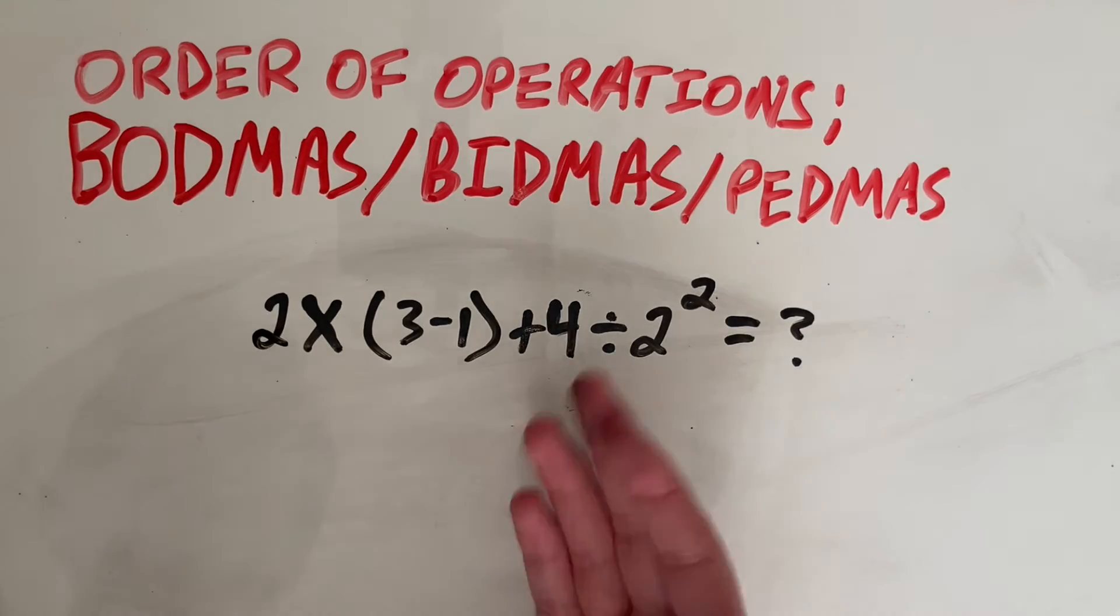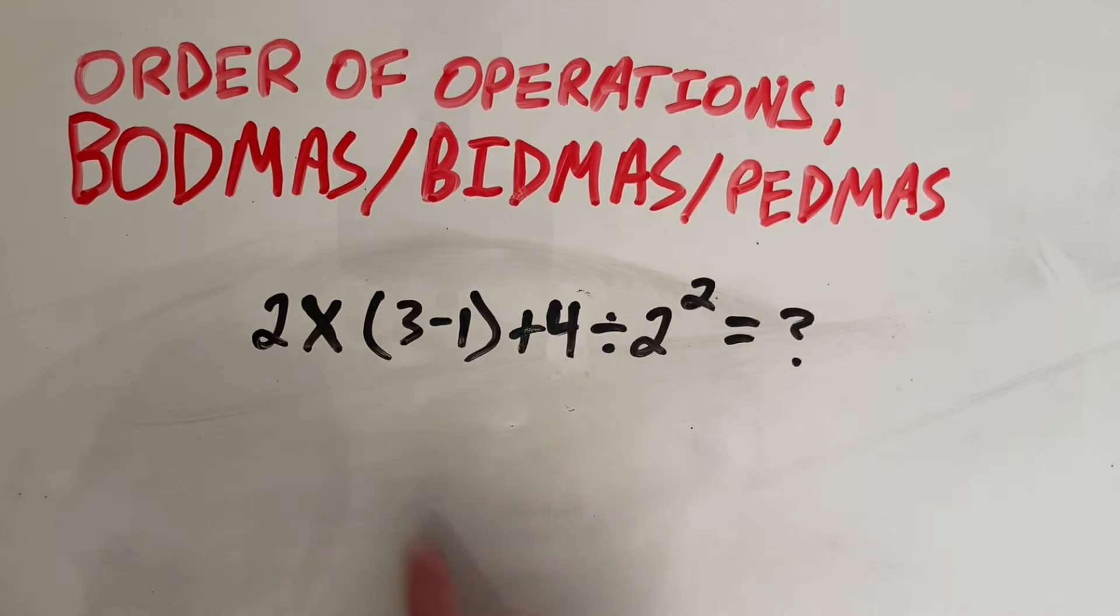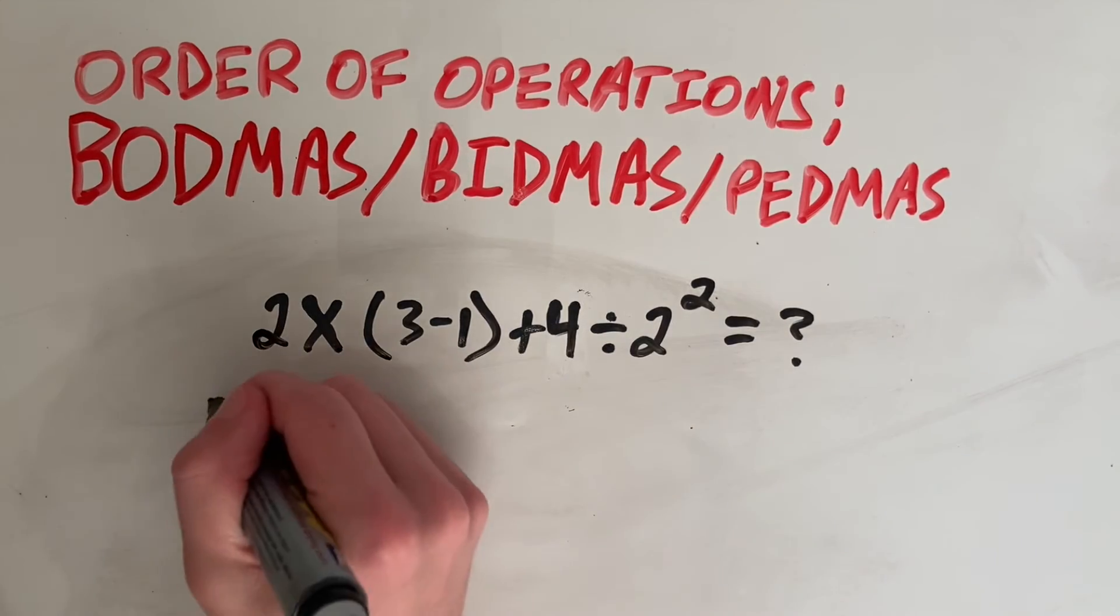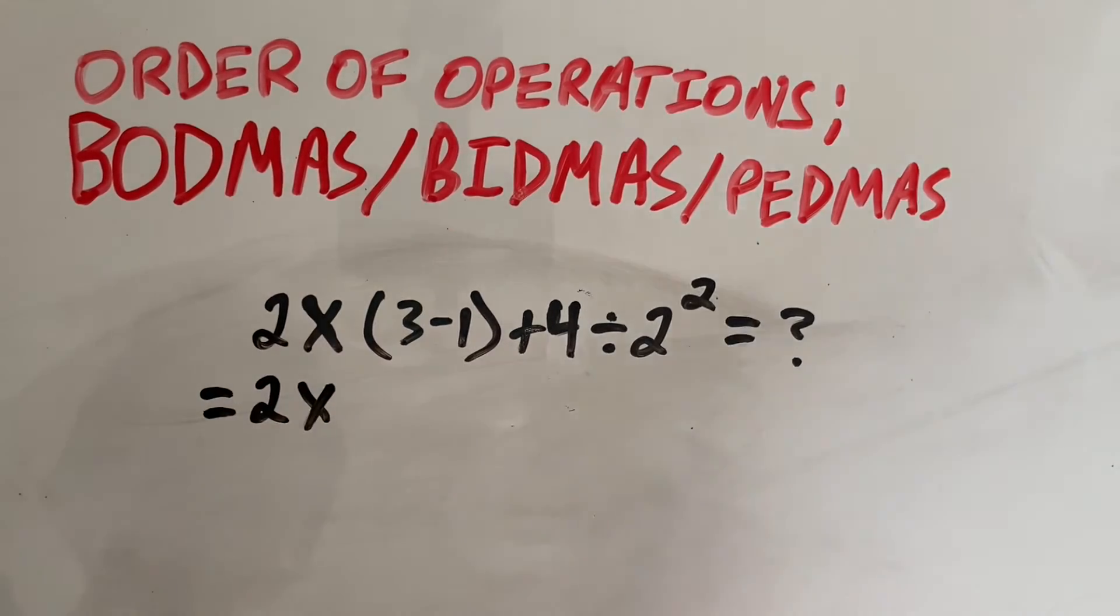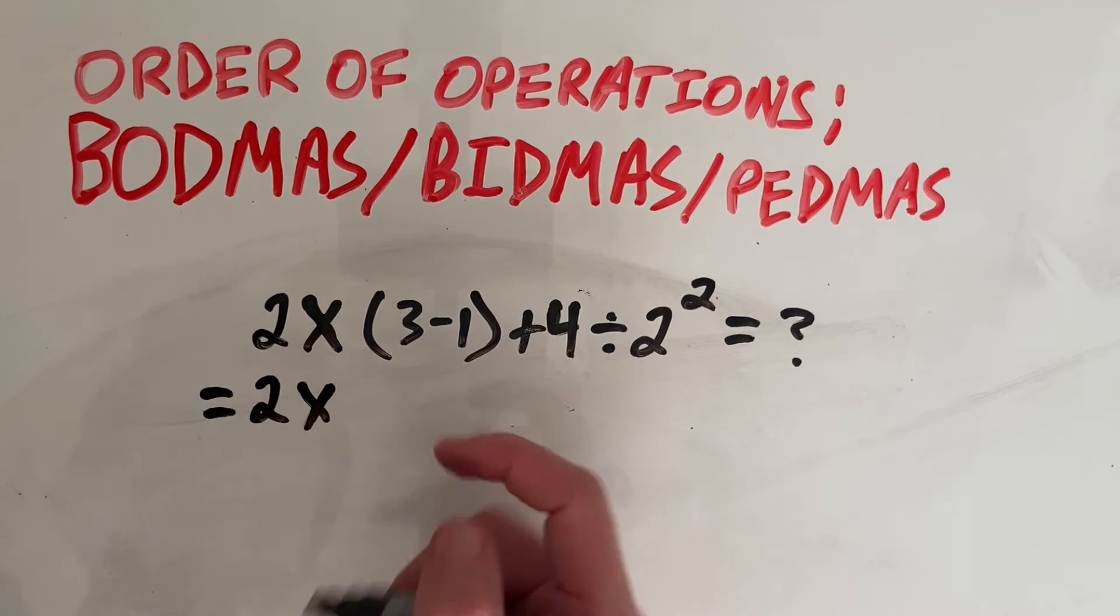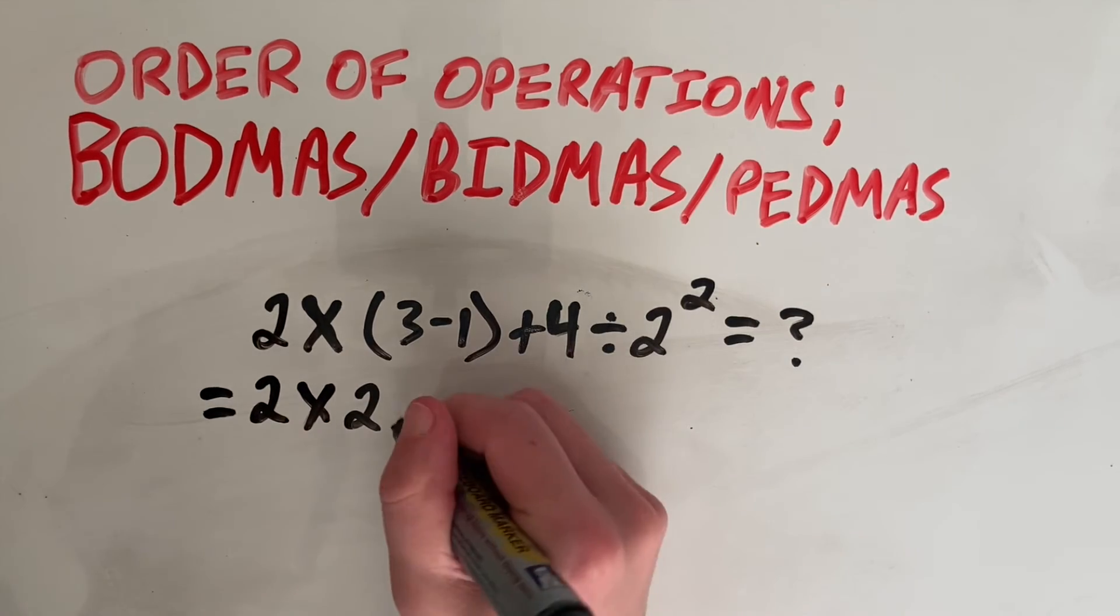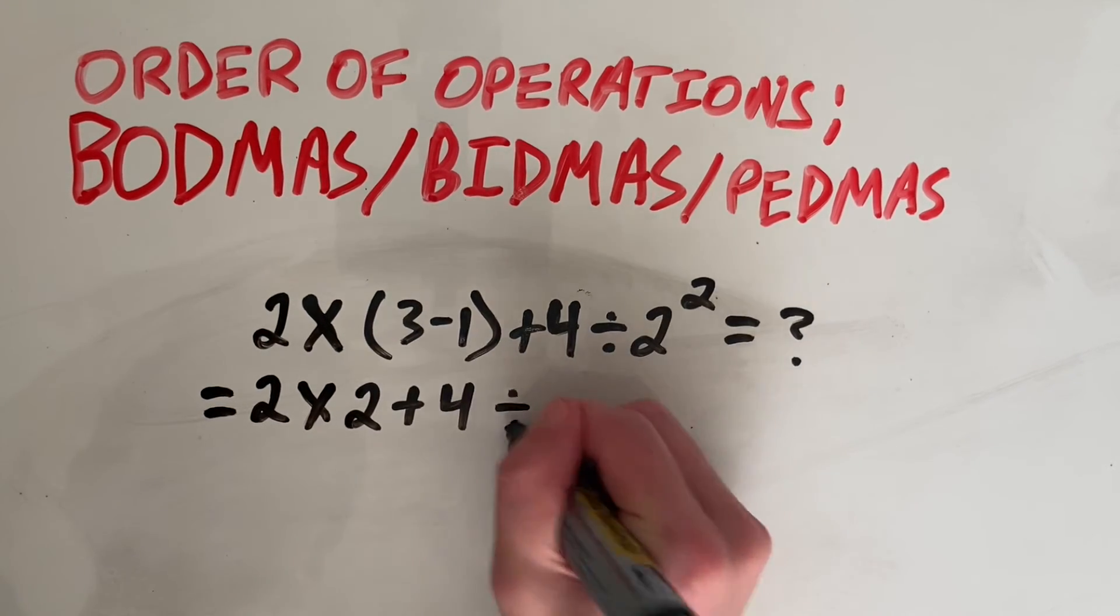So first, we always start looking for brackets. And yes, we have brackets. So we can do that as our first step. Everything else will stay the same. Once we do that brackets, that is equal to 2. And we'll just rewrite everything else.